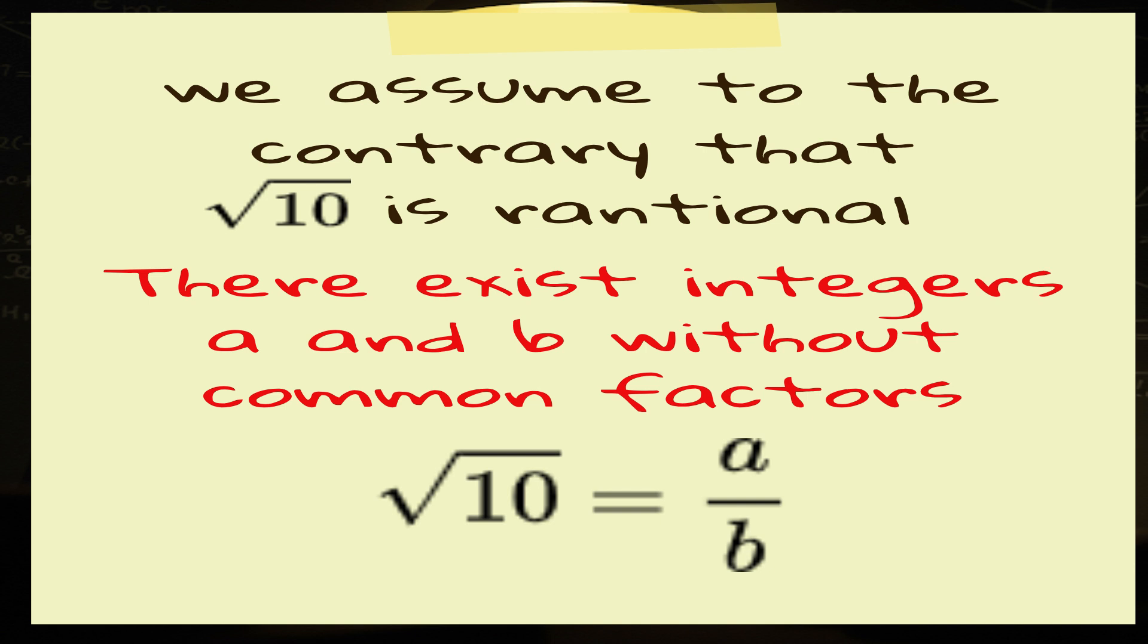In mathematical terms, we begin our proof by saying, assume to the contrary that the square root of 10 is rational. This signals to the reader that, while we don't actually believe the square root of 10 is rational, we're going to temporarily assume the opposite for the purpose of the proof. Our goal? To uncover a contradiction that will show this assumption can't possibly be true.